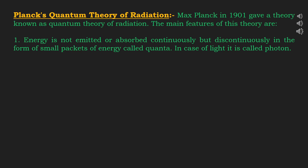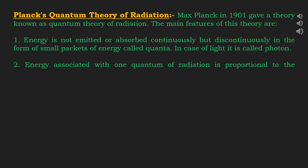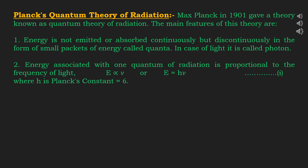Second feature: the energy associated with one quantum of radiation is proportional to the frequency of light. So E is proportional to ν, or we can say E is equal to hν. Here h is the proportionality constant known as Planck's constant, and its value is 6.626 × 10⁻³⁴ joule seconds.